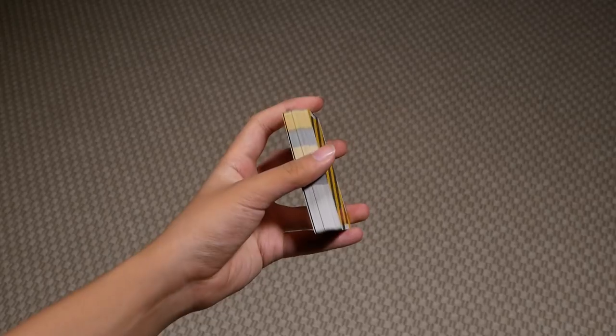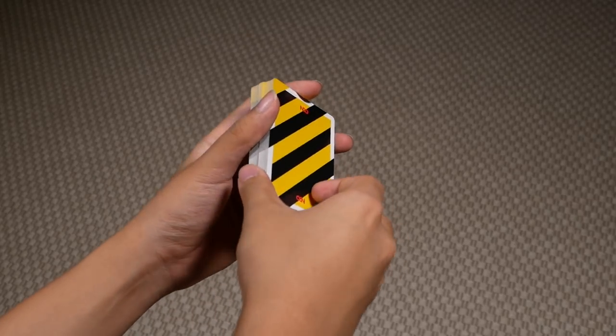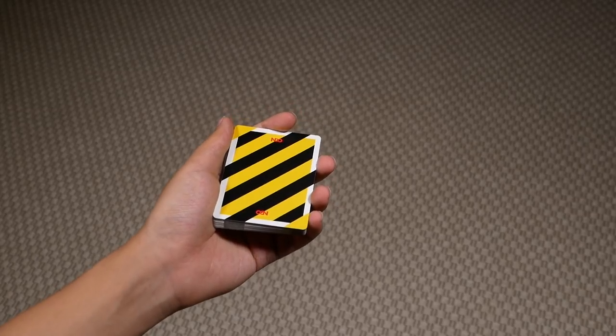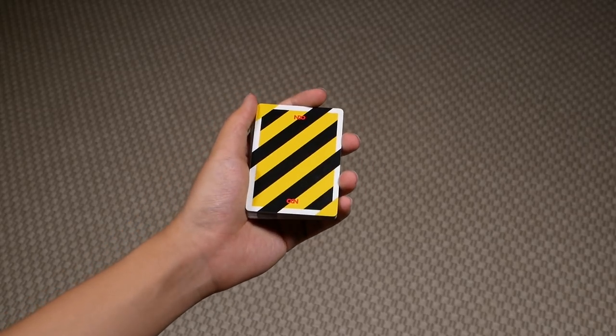So to do this move I suggest starting off by practicing with just half the deck and working your way up once you have the basic movements down. So to begin you're going to start off in dealer's grip.